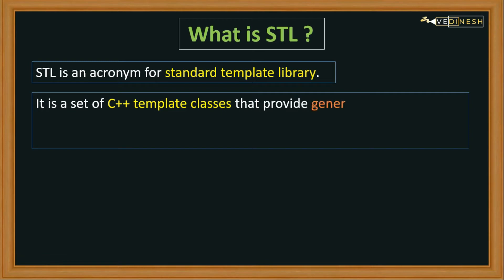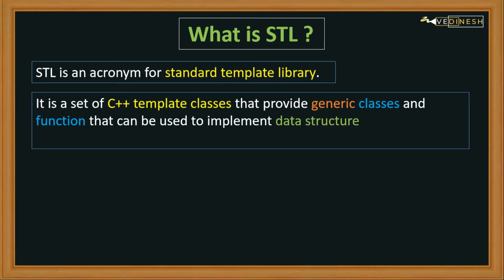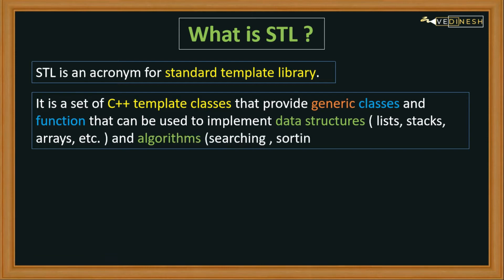STL is a set of C++ classes that provide generic classes and functions, which can be used to implement data structures like list, stack, arrays, etc., and algorithms for searching, sorting, and many more operations. Data structure is nothing but putting our data in such a manner that it would be easy to perform a particular operation on that data. We have lots of data structures like list, stack, queue, arrays, heaps, and graphs, which will be covered in upcoming courses.